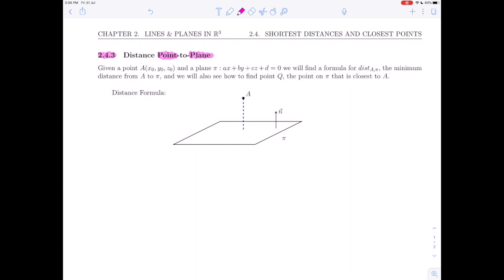Here we are going to be given a point A at coordinates (x0, y0, z0) and a plane π, ax plus by plus cz plus d equals 0. We're going to find a formula for the minimum distance from A to π, and we're also going to find the closest point on π to A and call that point Q.